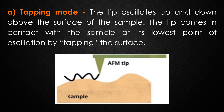In tapping mode the tip oscillates up and down above the surface of the sample. The tip comes in contact with the sample at its lowest point of oscillation by tapping the surface of the sample. The repulsive forces are detected when the tip taps the surface while attractive forces are detected at the peak of oscillation. The tapping mode generally lessens the damage done to the surface and the tip compared to the contact mode. This technique is used to image the formation of molecules in chemistry among many other applications.